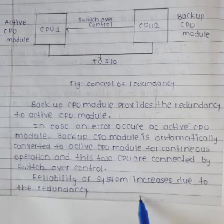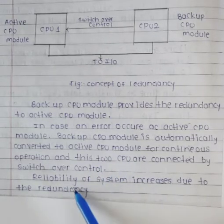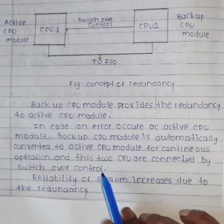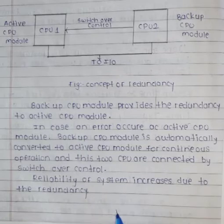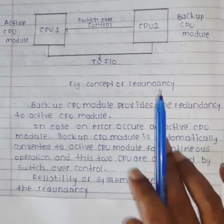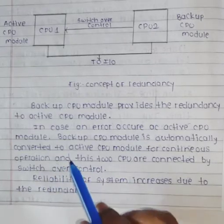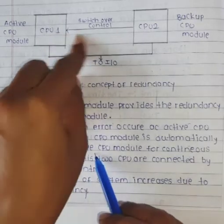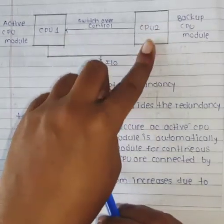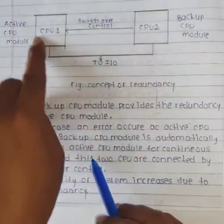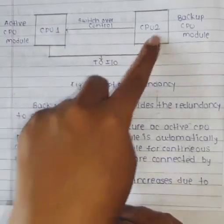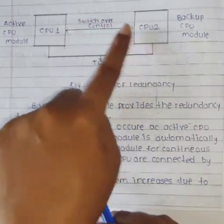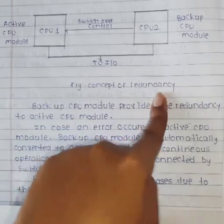Last point: reliability of the system is increased due to redundancy. Jo bhi system hai uski jo reliability hai, means trustable rehti hai — hum log is par trust kar sakte hain ki yeh system ka operation safely hota hai. Toh reliability system ki increase ho jaati hai because of this redundancy. Agar CPU first mein error aa gayi ya yeh kaam karna band ho gaya, to CPU 2 apne active CPU mein convert ho jaega aur jo operation perform kar raha tha uski jagah woh operation perform karega. Yeh dono CPU switch ke zariye control hote hain. Isi concept ko hum log concept of redundancy bolte hain.